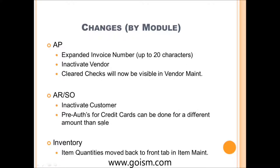Another big change is the ability to pre-authorize credit cards. For those of you using Sage Payment Solutions, currently if you have a pre-authorization for a sale and the invoice is for $1,000, you're pre-authorizing exactly $1,000. Now we'll have the ability to pre-authorize a larger amount — so if you don't know what the shipping charges will be, you can pre-authorize $1,050 but then charge only $1,040. This has been a sticky issue for some time with credit card processing, and now we'll be able to pre-authorize for a different amount on the sales order or invoice.